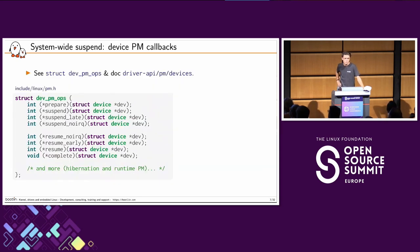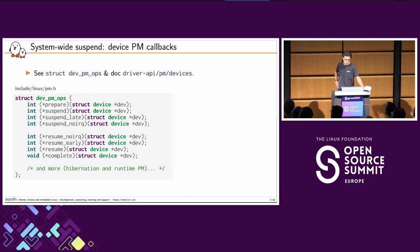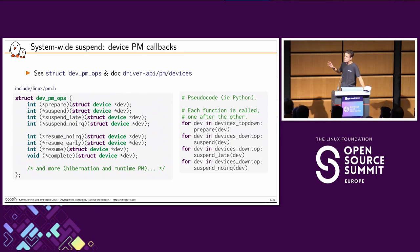Getting back to what it means to put one device into suspend: those are all the callbacks we are interested in. You have eight of them — four for suspend, the rest for resuming. It's always going to be symmetrical, so I won't talk too much about resuming, because what you do at suspend you're basically supposed to do the opposite at resume. The key thing is: you do prepare for every device, then suspend for every device, then suspend-late for every device, and then suspend-no-IRQ — not to be confused with doing prepare, suspend, suspend-late, and suspend-no-IRQ for each device one after the other. That's really not the same thing.